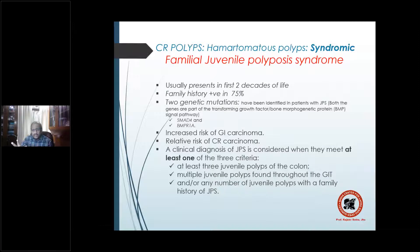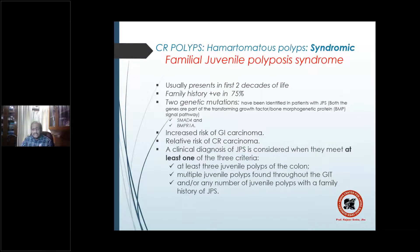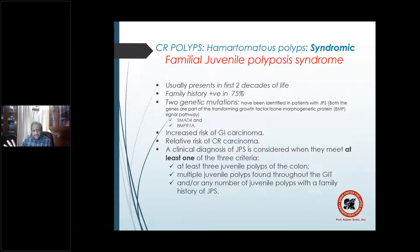The juvenile polyposis syndrome (JPS), as opposed to sporadic juvenile polyposis, usually presents in the first two decades of life. Family history is found in 75%. Two genetic mutations have been identified, both in genes that are part of the transforming growth factor or bone morphogenetic protein pathway. Key points to remember: first two decades of life, family history in 75%, and two genetic mutations.